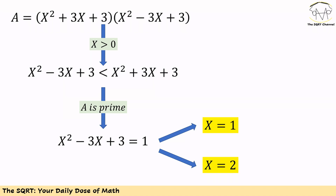Since the number is prime, one of the two factors must equal 1. Because the second term is the smaller one, we set x² − 3x + 3 = 1 and solve. This gives us two possible values: x = 1 or x = 2, and these are our answers.